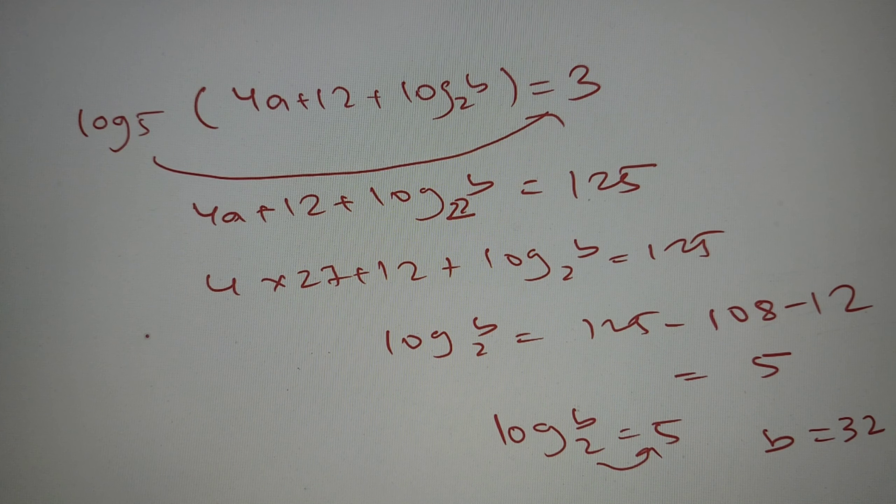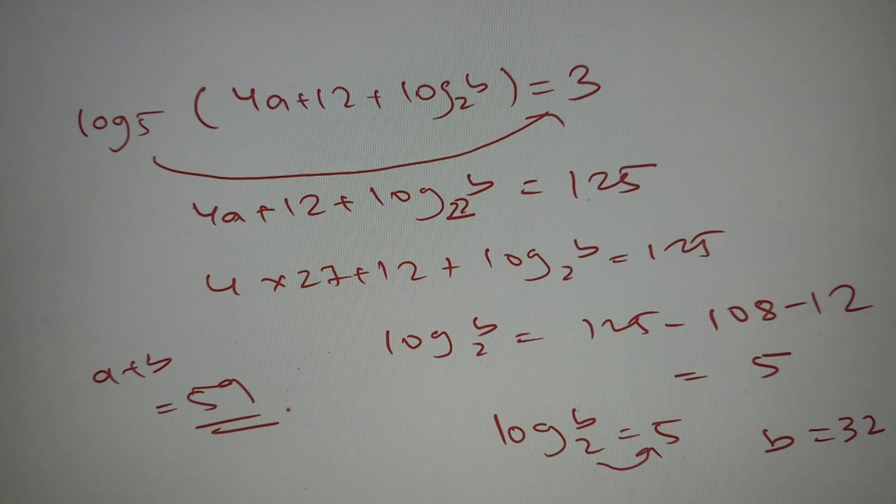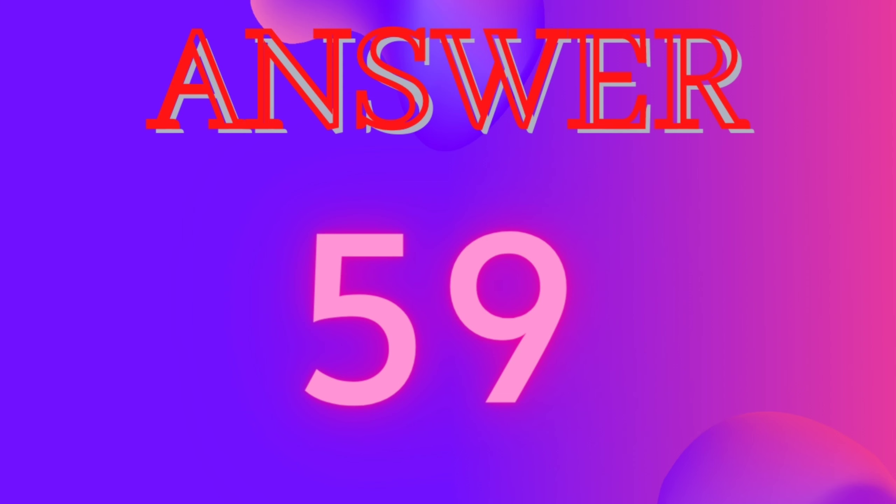We can say that a equals 27 and b equals 32. So a plus b is nothing but 59, that is option number C according to the given question. So our final answer is option number C, 59. Thank you.